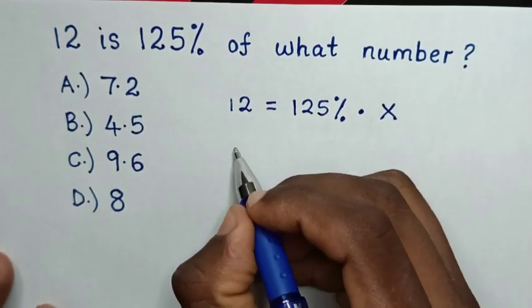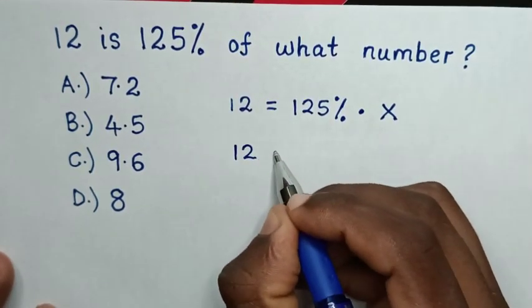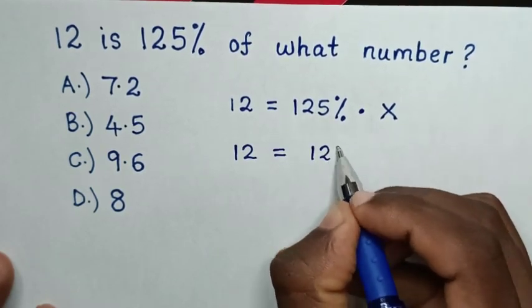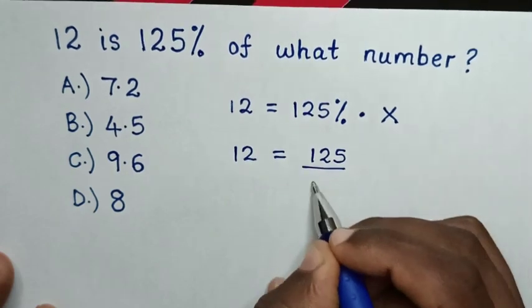Then, in the next step, it will be 12 is equal to 125% into fraction, which is 125 over 100, then times x.